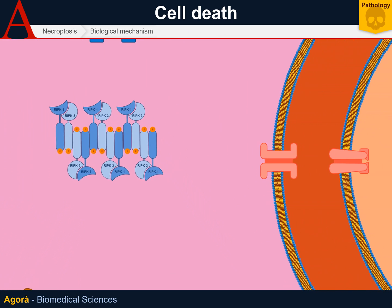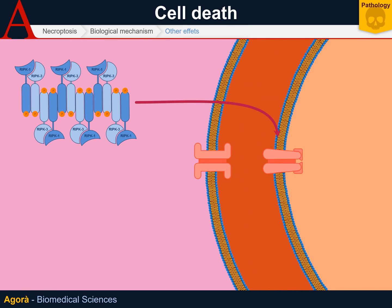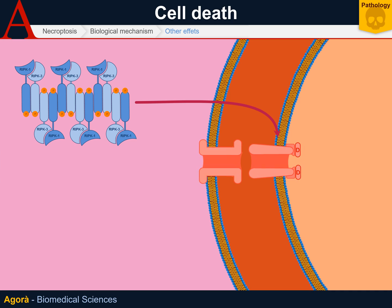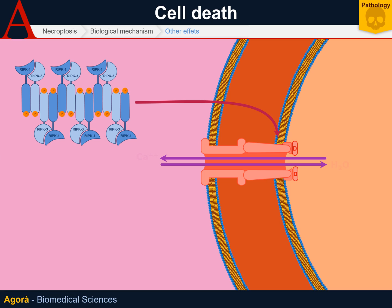The necrosome is also capable of activating ANT — adenine nucleotide translocase — the inner part of the mitochondrial pore, increasing its affinity for cyclophilin D. The opening of the inner part of the pore inevitably leads to the opening of the outer part, and the complete mitochondrial permeability transition pore forms. This pore leads to water inflow into the mitochondrion, causing osmotic rupture — a phenomenon of necrosis, not apoptosis. Moreover, the necrosome can break lysosomes by interacting with molecules that stabilize the membrane.